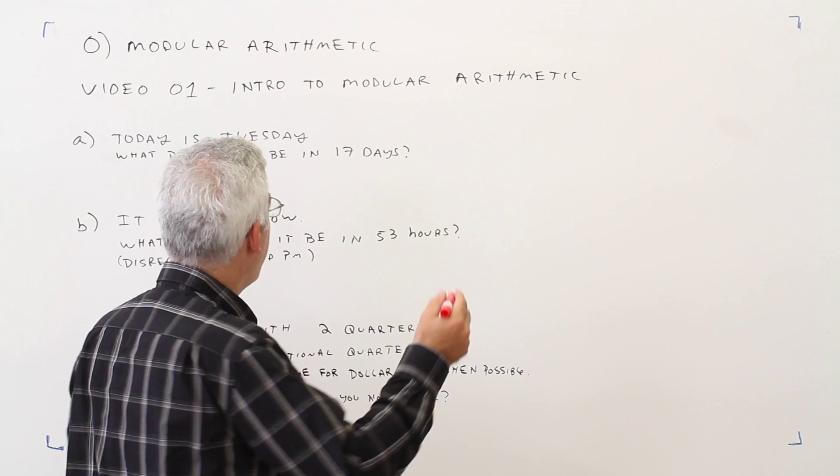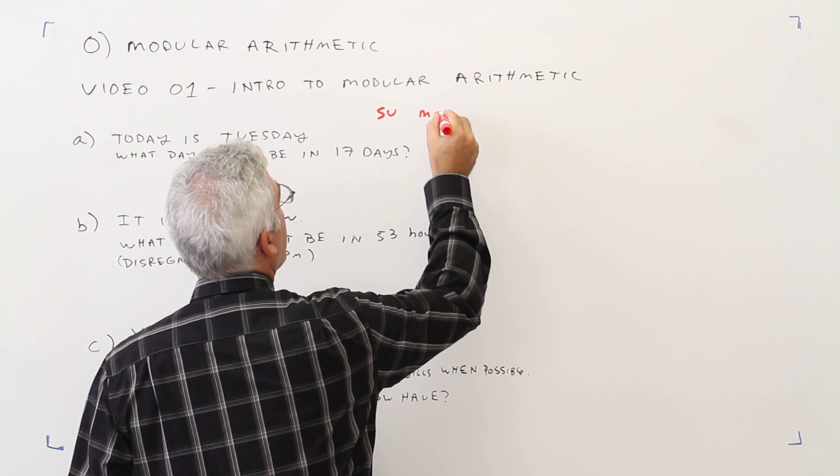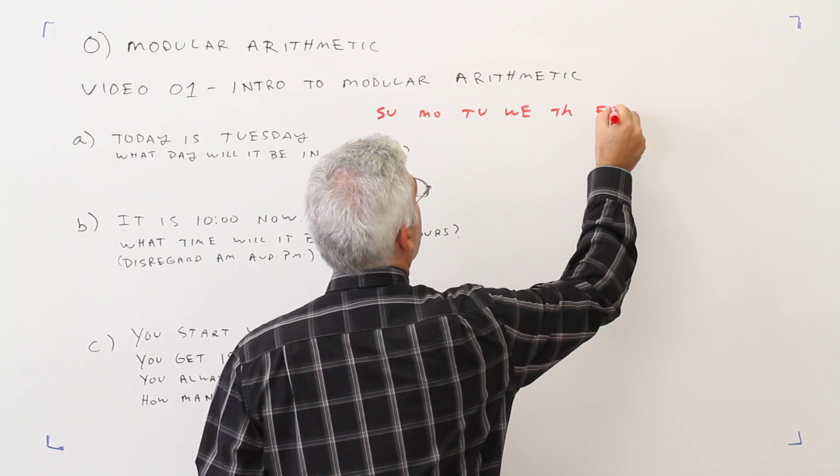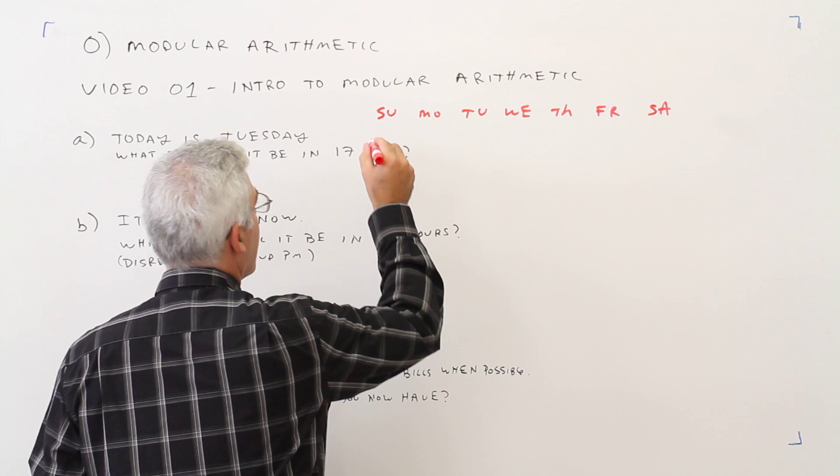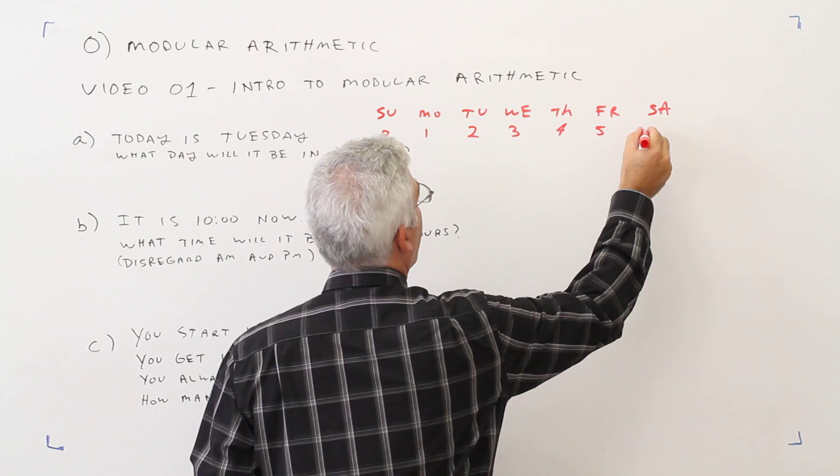So let's just come up with a listing here of days. Sunday, Monday, Tuesday, Wednesday, Thursday, Friday, and Saturday. And I'll assign each of them numbers. Sunday will be 0, 1, 2, 3, 4, 5, 6.